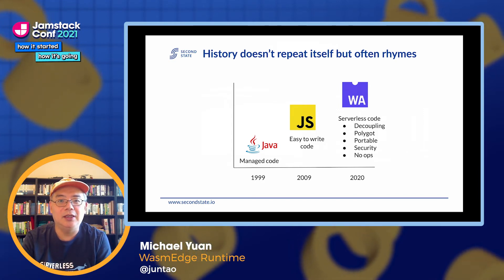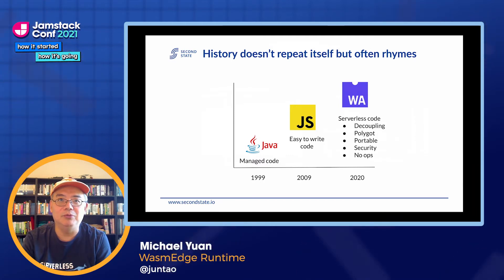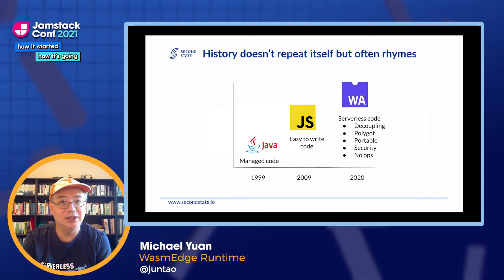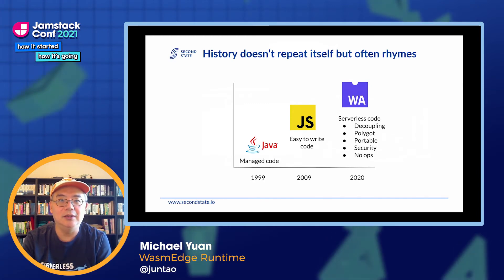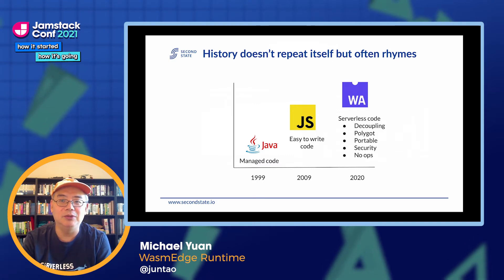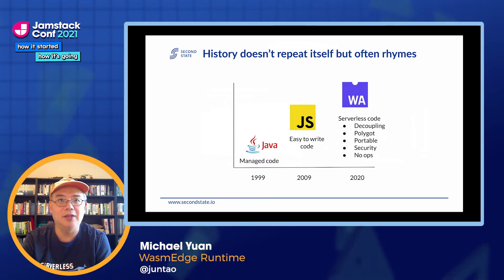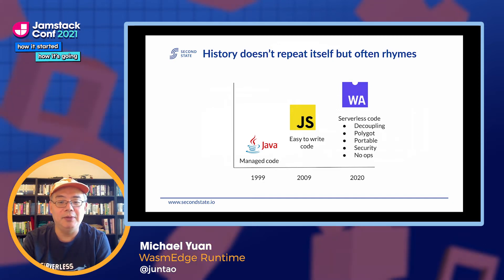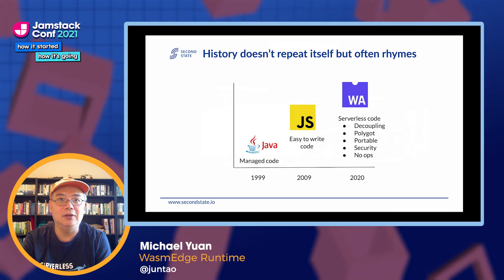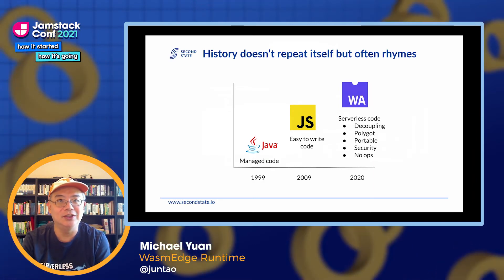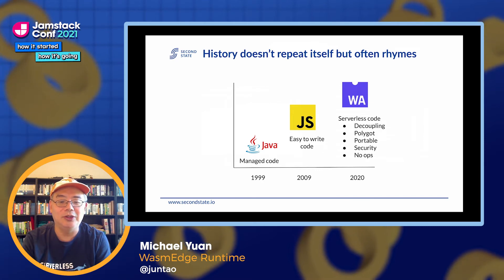Then 10 years later, in 2009, JavaScript made a similar migration. JavaScript started as, and still is, a primary programming language in the browser. Then Node.js came along and JavaScript became one of the dominant programming languages on the backend as well. A lot of new applications started with JavaScript, including Netlify functions and universal functions and things of that nature — they also support JavaScript functions.